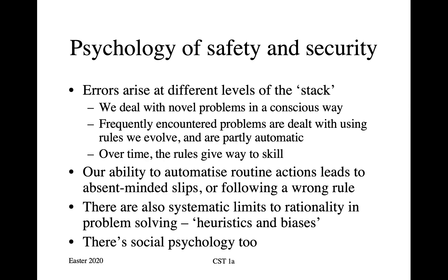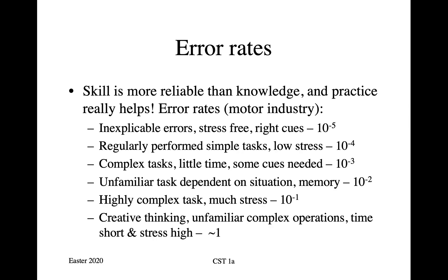There are also systematic limits to rationality in the way our cognitive capabilities interact with our instinctive capabilities — the so-called Type 1 and Type 2 kinds of thinking — which can lead us to make wrong decisions about things like risk. These limitations can be exploited by criminals, terrorists, governments, marketers, and so on. Finally, we mustn't forget social psychology, which is extraordinarily important in driving how people behave.